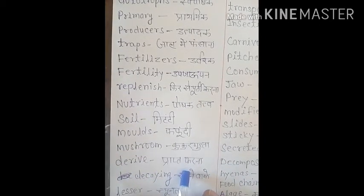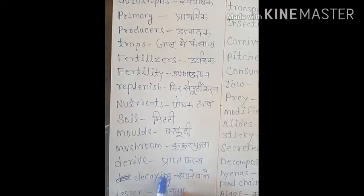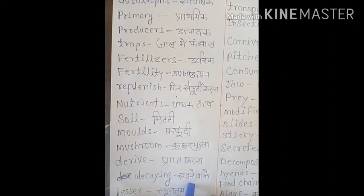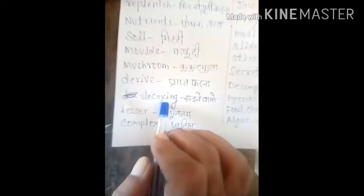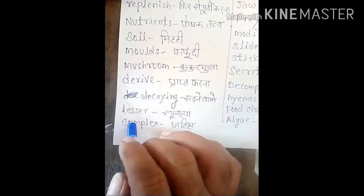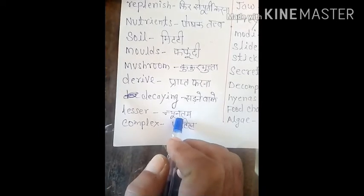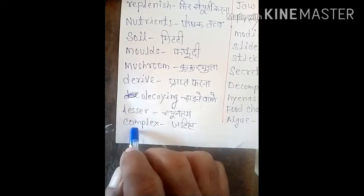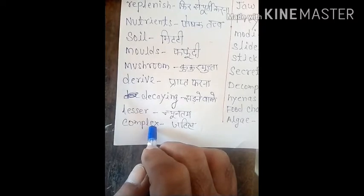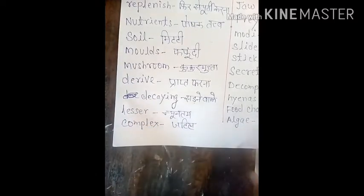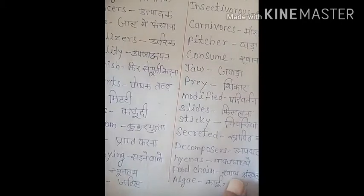They derive their food from dead and decaying matter. Derive means 'prapt karna'. Decaying means 'sadhne wale'. Next word is 'lesser', L-E-S-S-E-R. Lesser means 'nune thumb'. Next word is 'complex', C-O-M-P-L-E-X. Complex hoti hai 'jatil' ya 'pechida' bolte hain na — jatil.